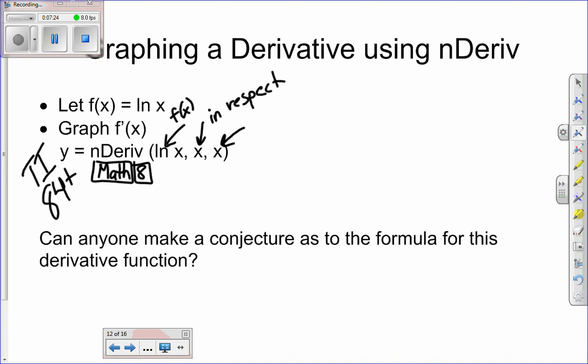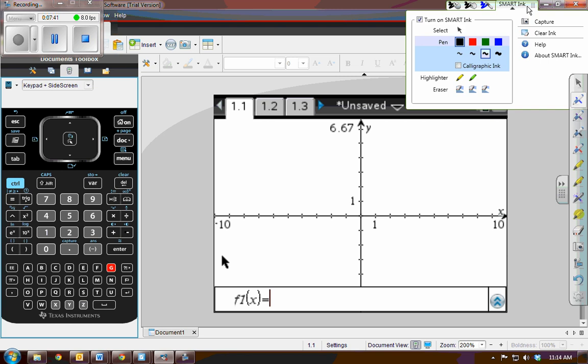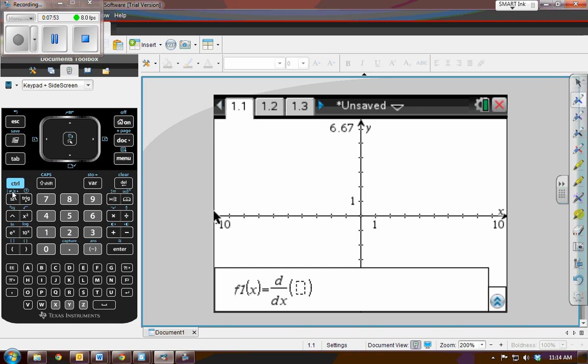Now, I'm going to show you how to do this using the inspire. So those of you using an inspire, we are going to put the derivative. I got a great shortcut for you. Check this out. If you go shift minus, notice I get derivative, way cool, huh? x, and then I type in here natural log. So it is control natural log for x, and then I press enter.